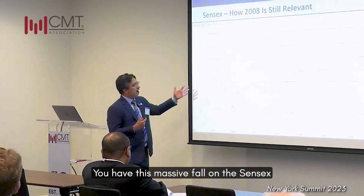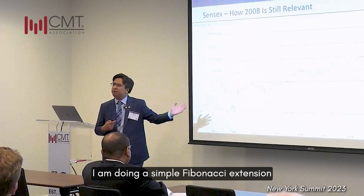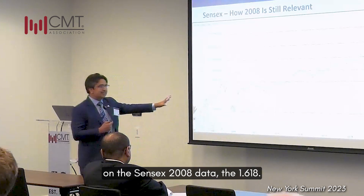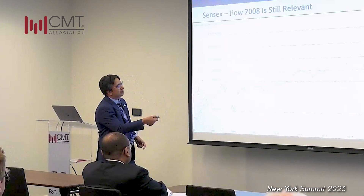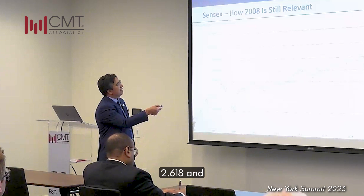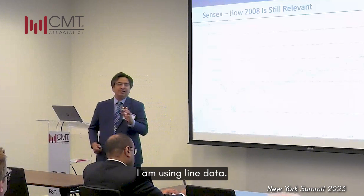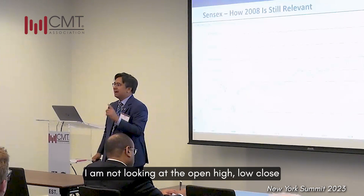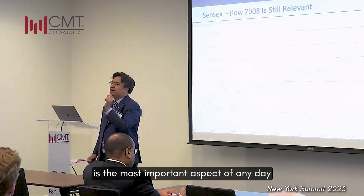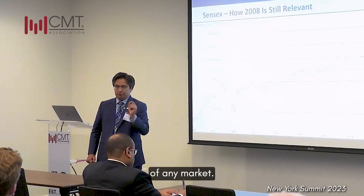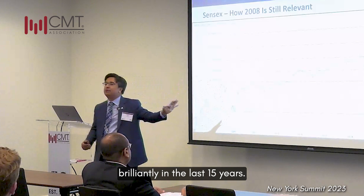So this was 2008 — you have this massive fall on the Sensex which happened over a year. I'm doing a simple Fibonacci extension on the Sensex 2008 data. The 1.618 — have a look at how beautifully that's worked. 2.618, and recently the next level 4.236. The difference here is I'm using line data, using closing prices. I'm not looking at open-high-low-close because I think the close is the most important aspect of any day, of any market. And that has worked brilliantly in the last 15 years.